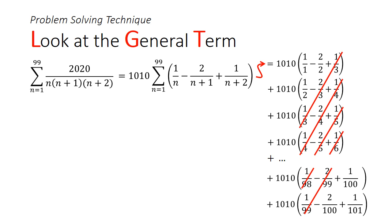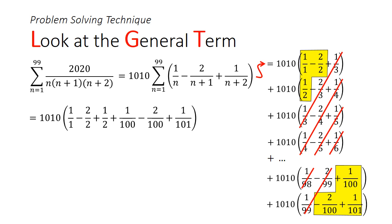Only six terms remain: three at the start — 1/1, −2/2, +1/2 — and three at the end — +1/100, −2/100, +1/101. Together, multiplied by 1010, this gives 5049 over 100×101, which simplifies to 5049 over 10, or 504.9. Since we apply the floor function and round down, the final answer is 504.